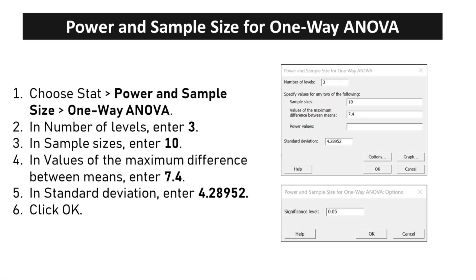Choose STAT, power and sample size, one way ANOVA. In number of levels, enter 3. In sample sizes, enter 10. In values of the maximum difference between means, enter 7.4. In standard deviation, enter 4.28952. Click OK.